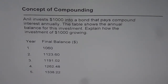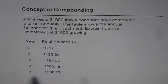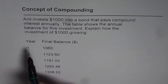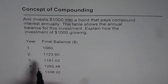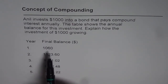Anil invests $1000 into a bond that pays compound interest annually. The table shows the annual balance for this investment. It asks us to explain how the investment of $1000 is growing. We have this table which gives us years 1 to 5 and the balance at the end of each year.